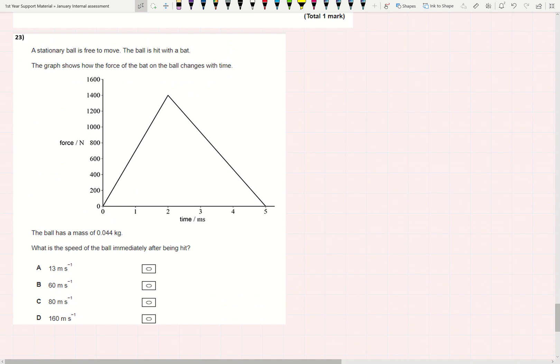And then this one, a stationary ball is free to move. The ball is hit with a bat. The graph shows how the force of the bat on the ball changes with time. The ball's got a mass of 0.044, trying to find speed. I know that impulse is the area under a force time graph, and that also equals change in momentum. I could also say that it equals Mv minus Mu. I could also say that it equals Ft.